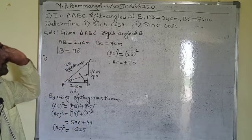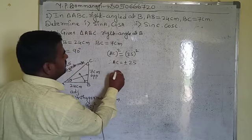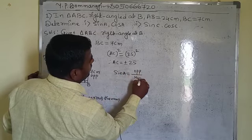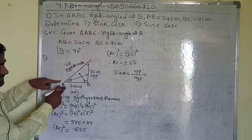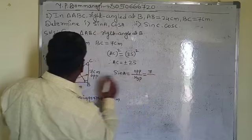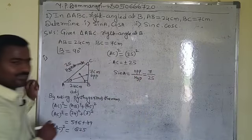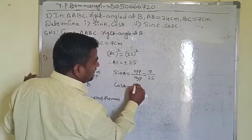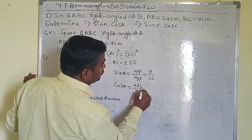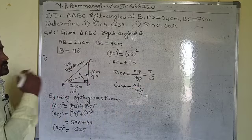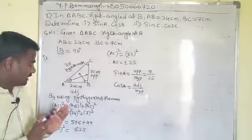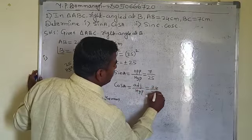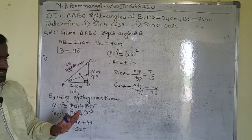For angle A: sine A means opposite divided by hypotenuse. The side opposite to A is BC = 7, and the hypotenuse is 25, so sine A = 7/25. Cosine A means adjacent divided by hypotenuse. The adjacent side to A is AB = 24, so cosine A = 24/25.